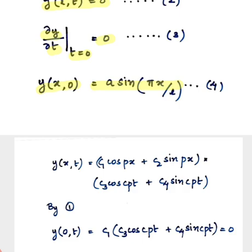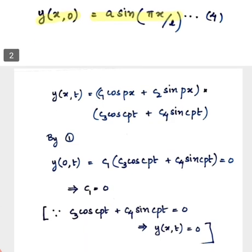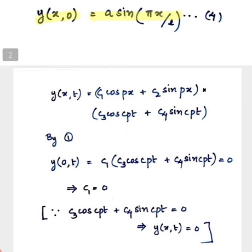Now we know that the wave equation has three solutions, but we are taking one suitable solution where we are getting a periodic function both in terms of x and in terms of t. So we are taking the solution of the wave equation as y(x,t) equal to (c1 cos px + c2 sin px)(c3 cos cpt + c4 sin cpt).